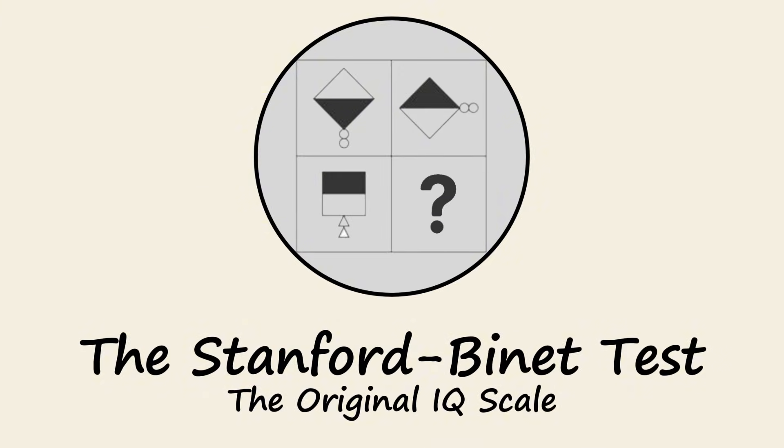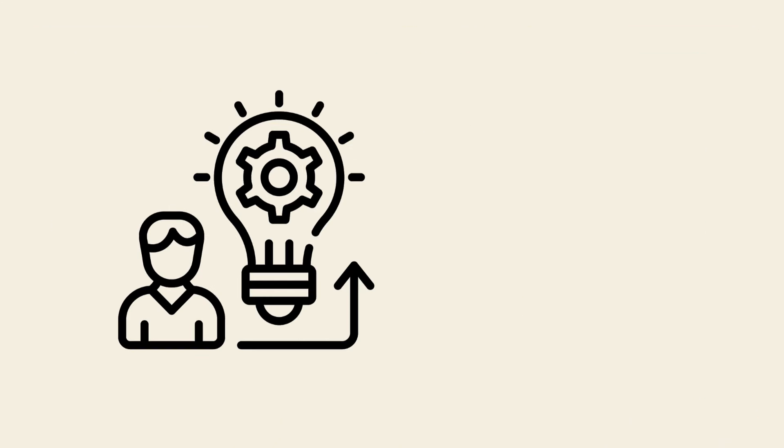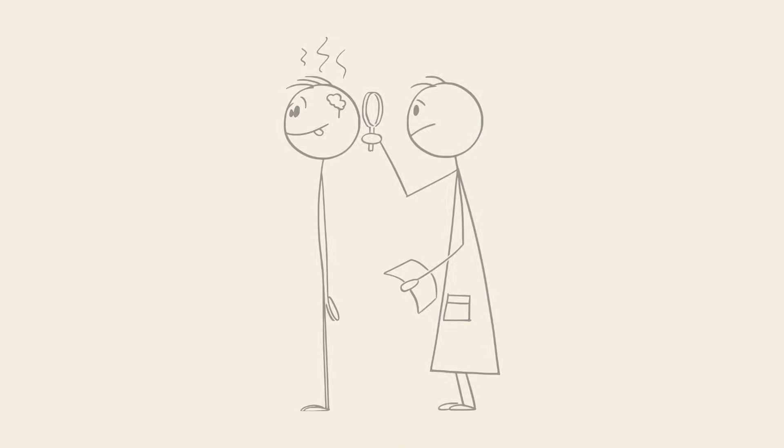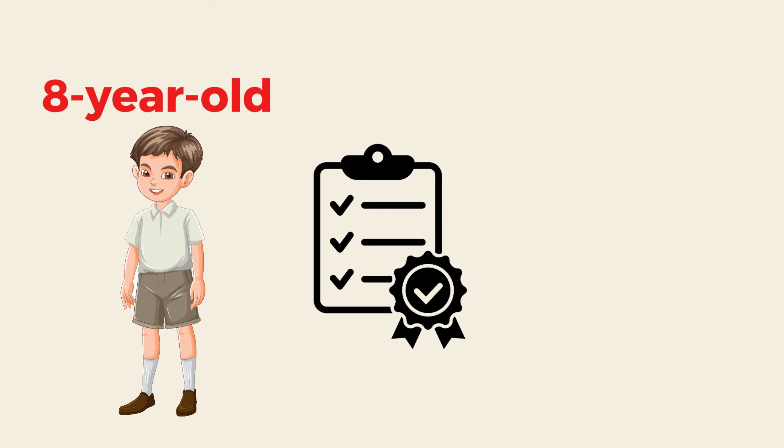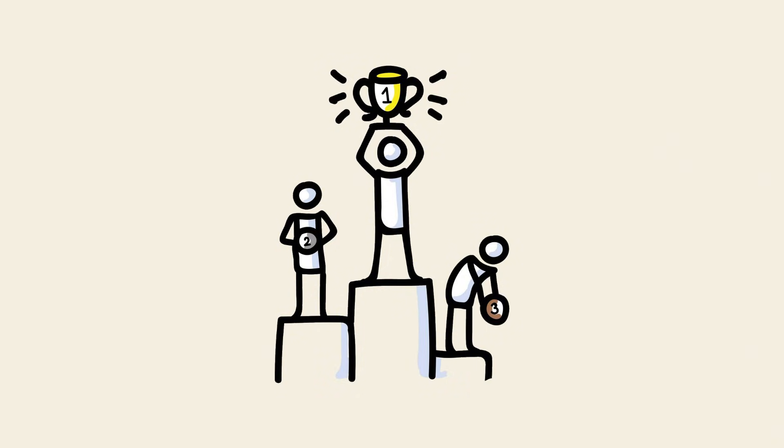The Stanford-Binet Test, the original IQ scale. This is where it all began. The Stanford-Binet Intelligence Scale, developed in the early 1900s, was one of the first real attempts to measure intelligence systematically. It introduced the idea of mental age, where if an eight-year-old performed at the level of an average ten-year-old, they'd be considered ahead of their peers.